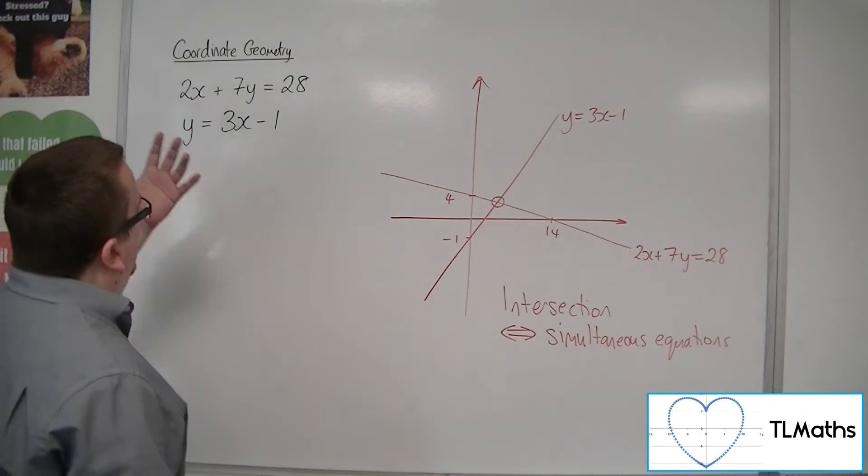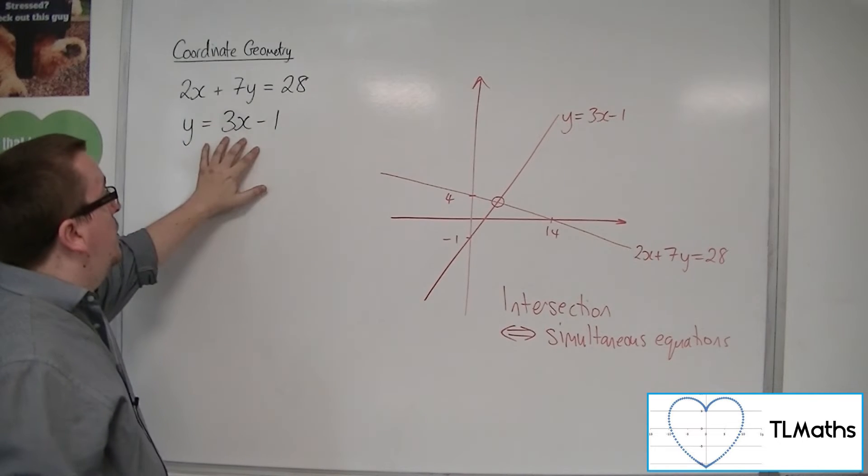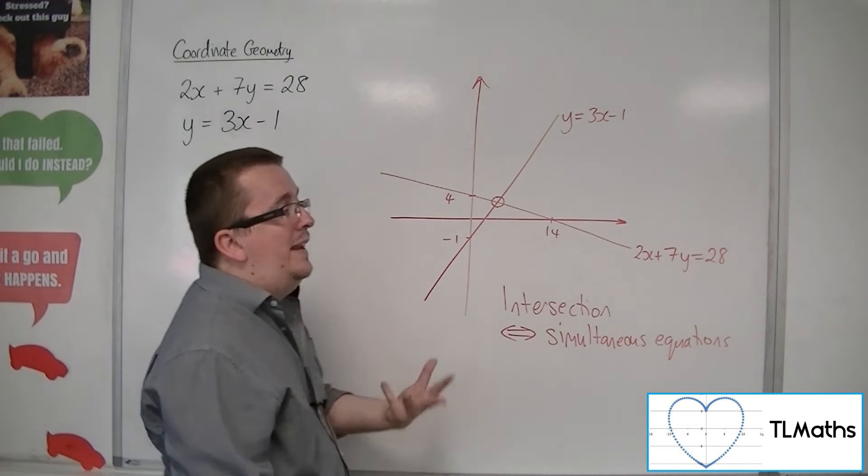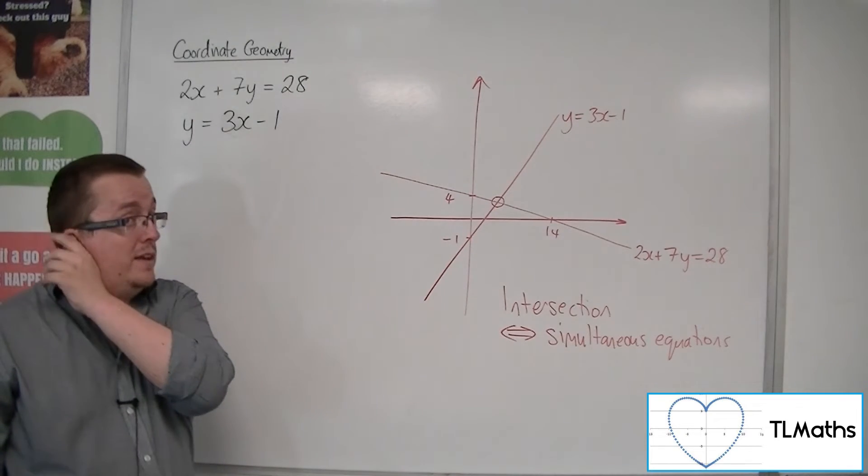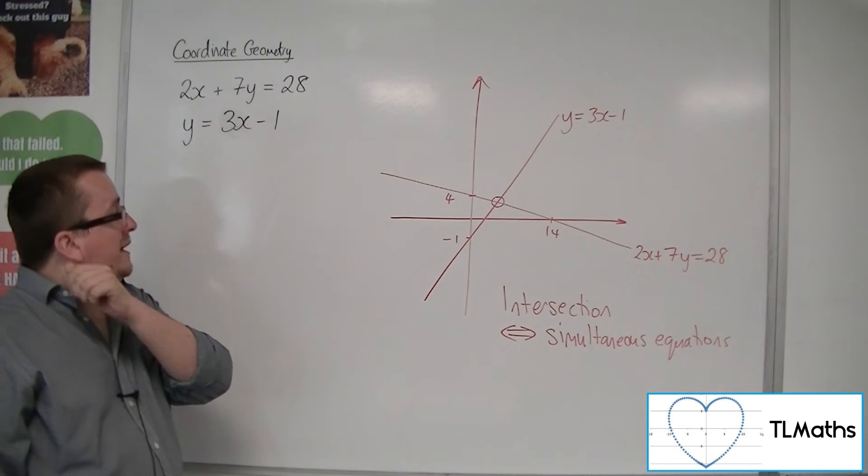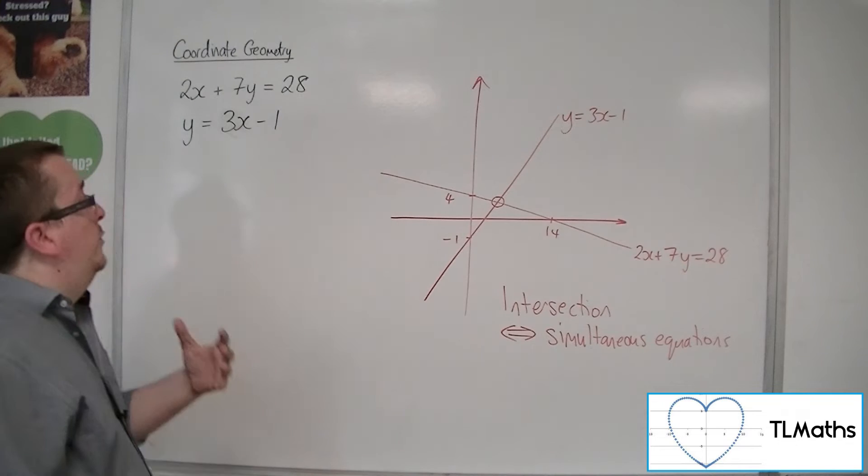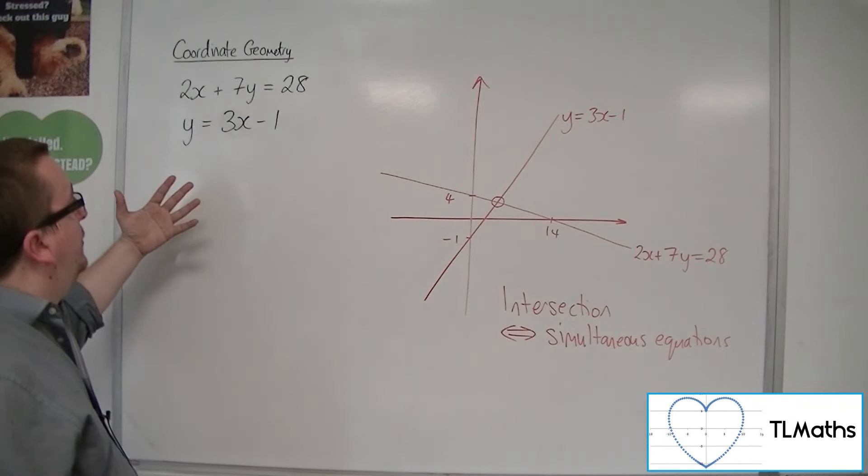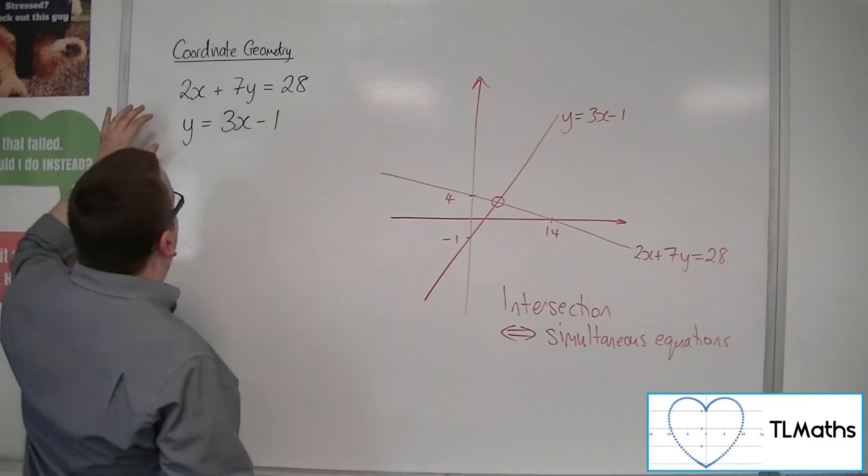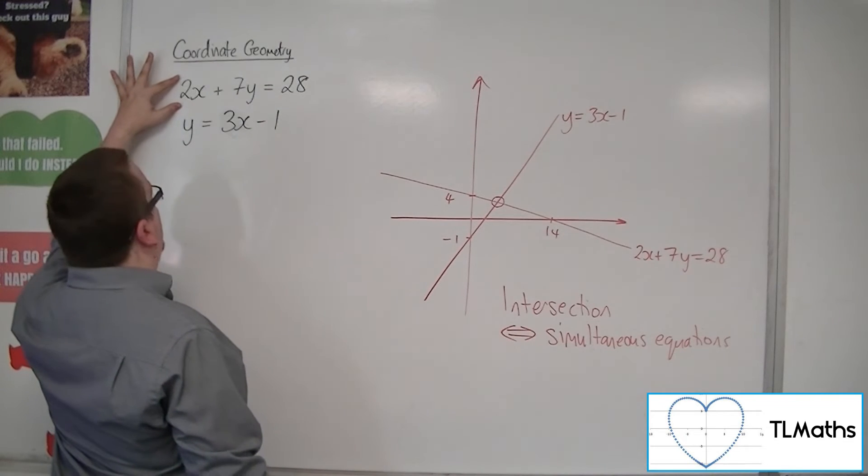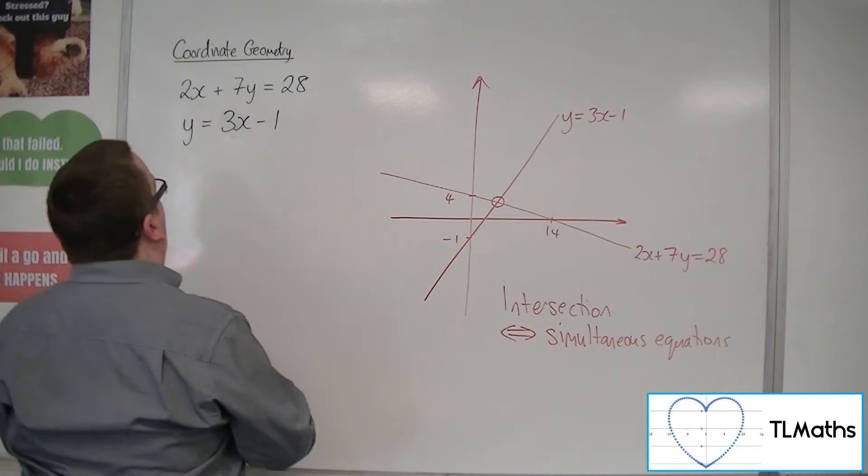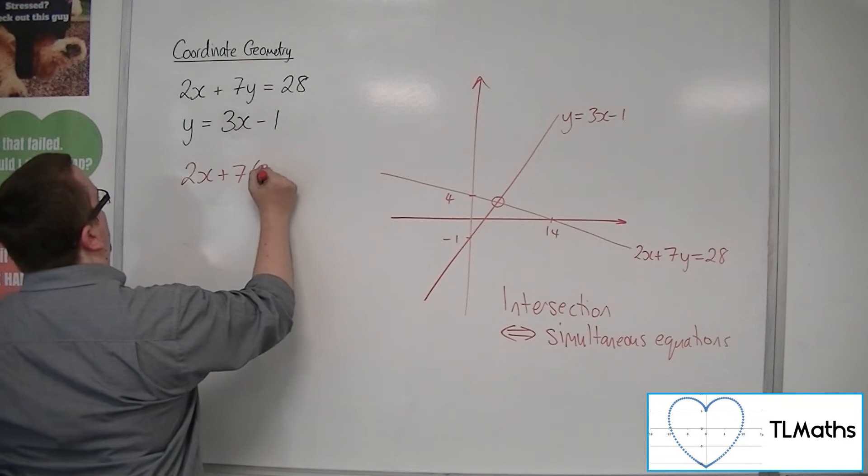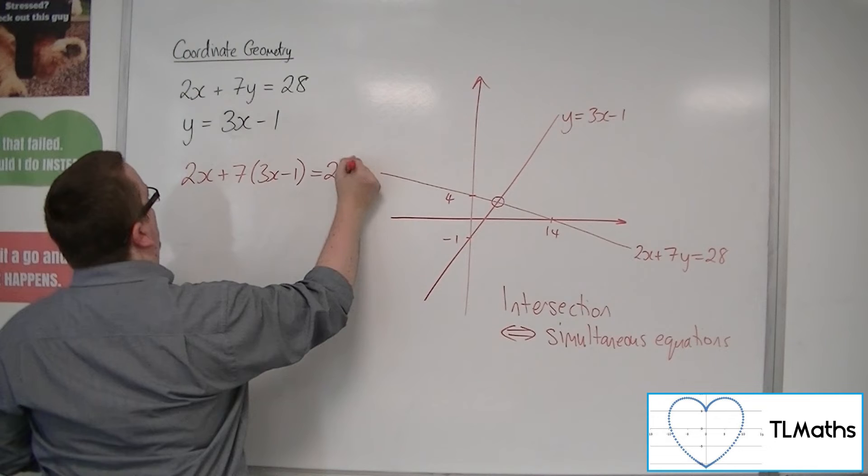So in other words, to find where they intersect, I need to solve this pair of simultaneous equations. You should have seen how to do that on several occasions. In a lot of cases, using the elimination method, but certainly also using the substitution. And this one lends itself well to the substitution method. So I'm going to replace the y in the first equation with 3x minus 1.